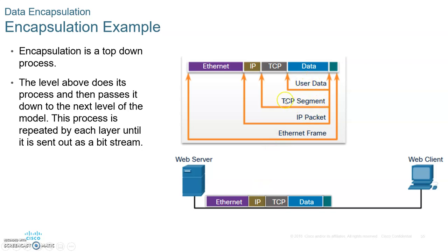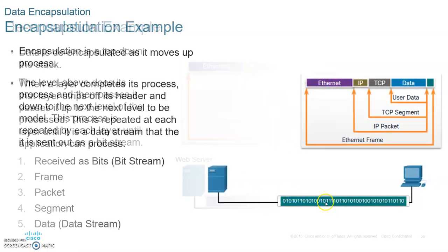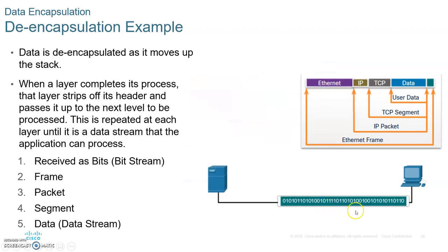The data at the transport layer becomes a segment; the segment is placed into a packet, the packet is placed into a frame, and the frame is placed on the media in ones and zeros. On the other end, you grab the ones and zeros, form them into a frame, open the frame, pull out the packet, pull the segment out of it, pull the data, and give it to the application layer.